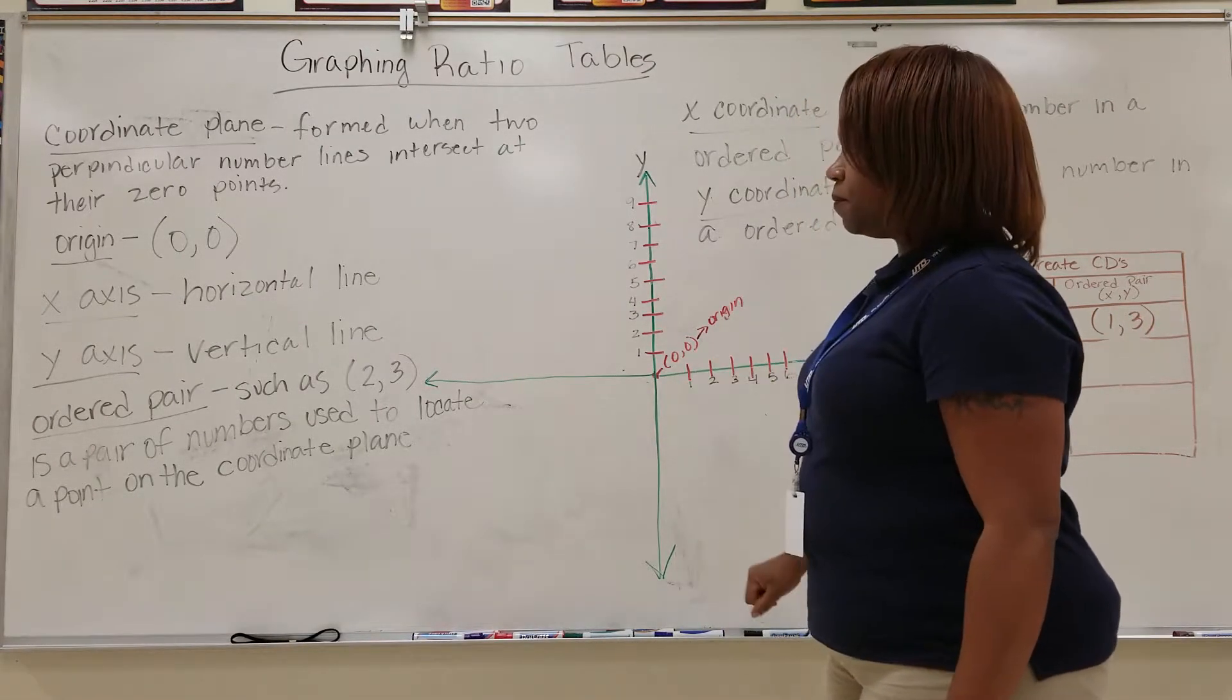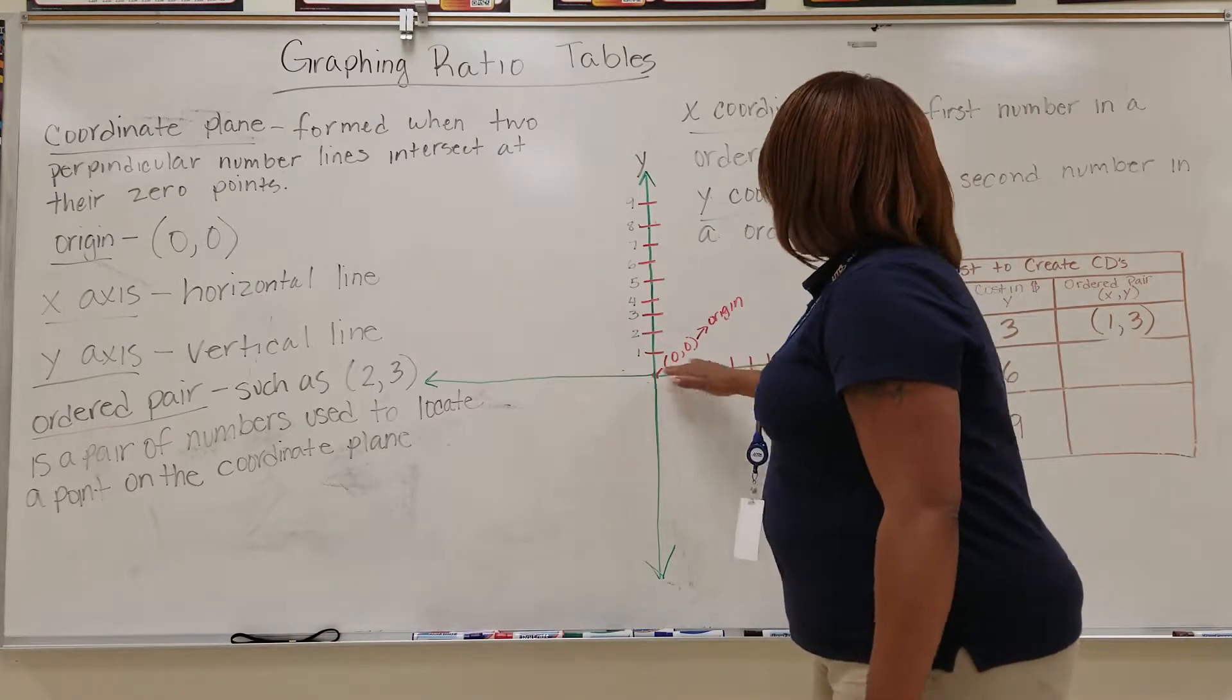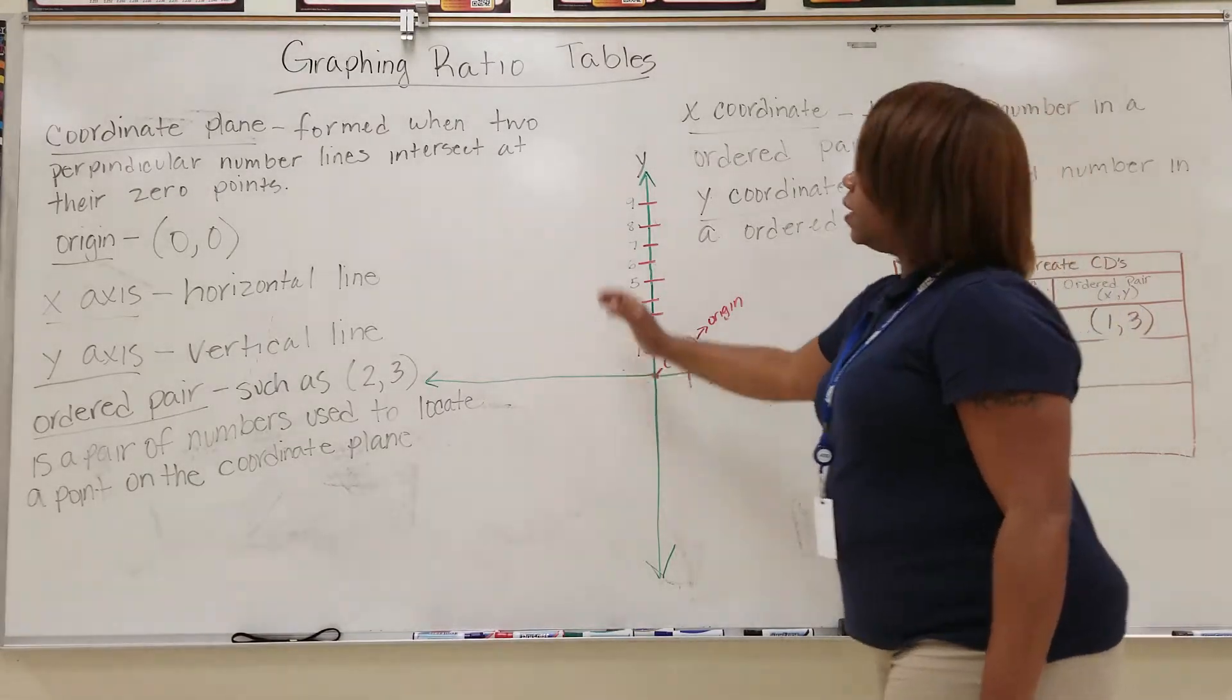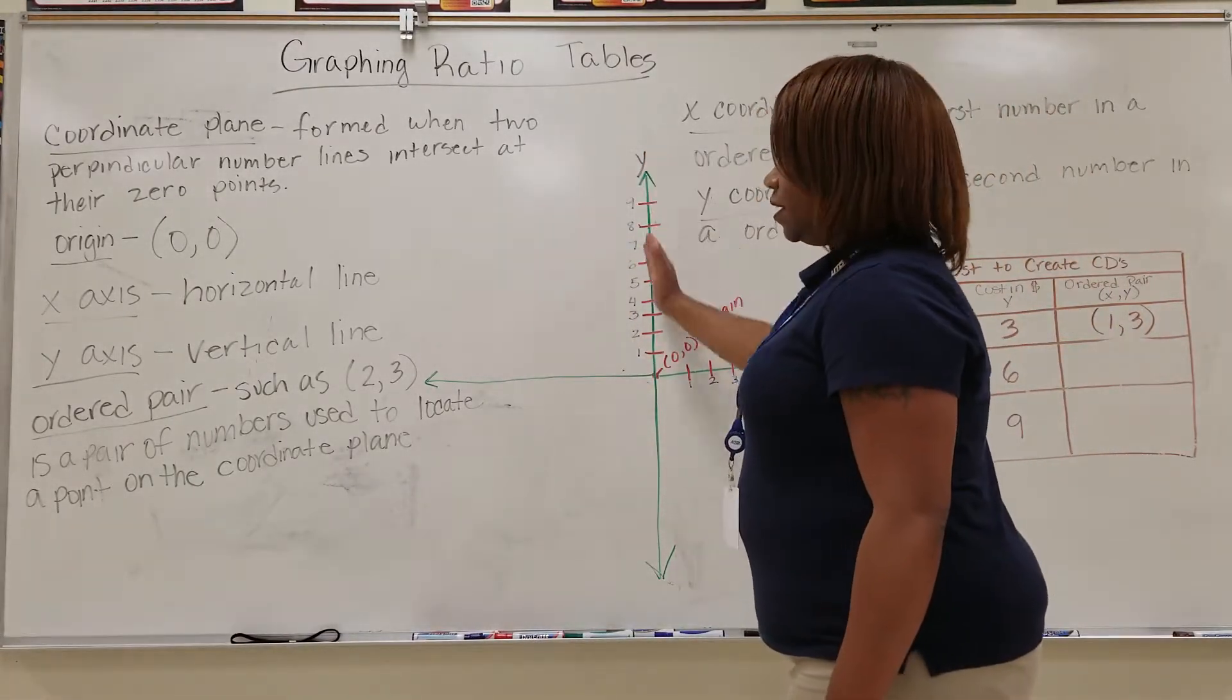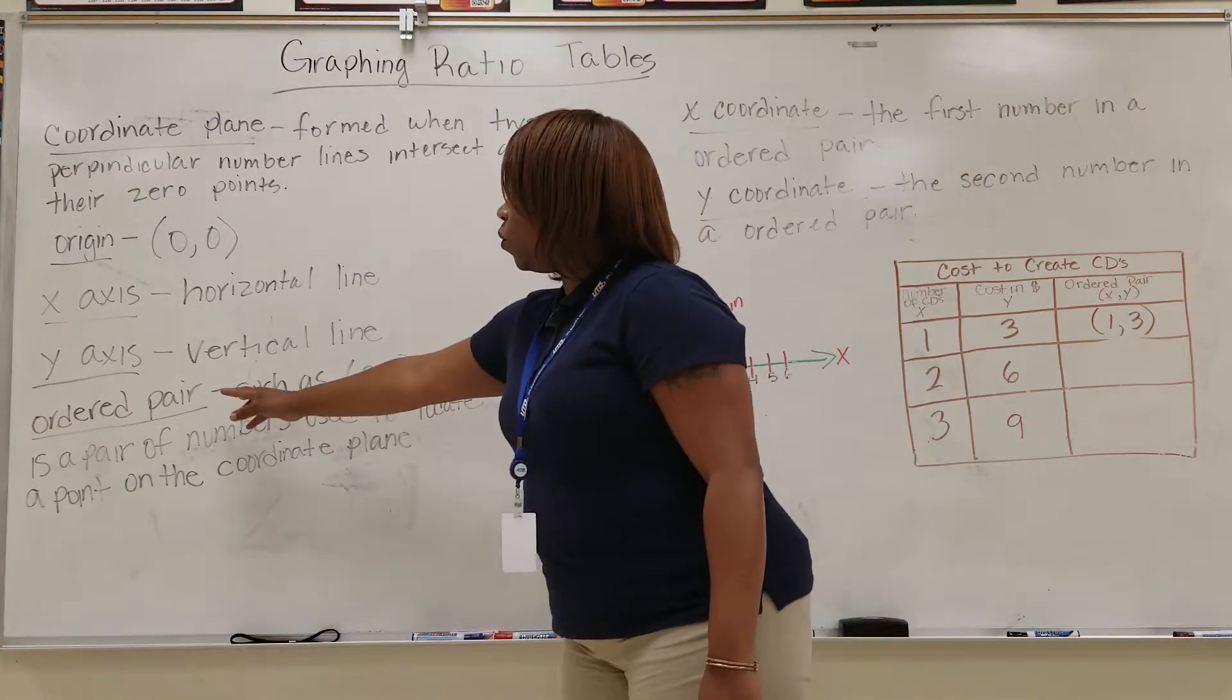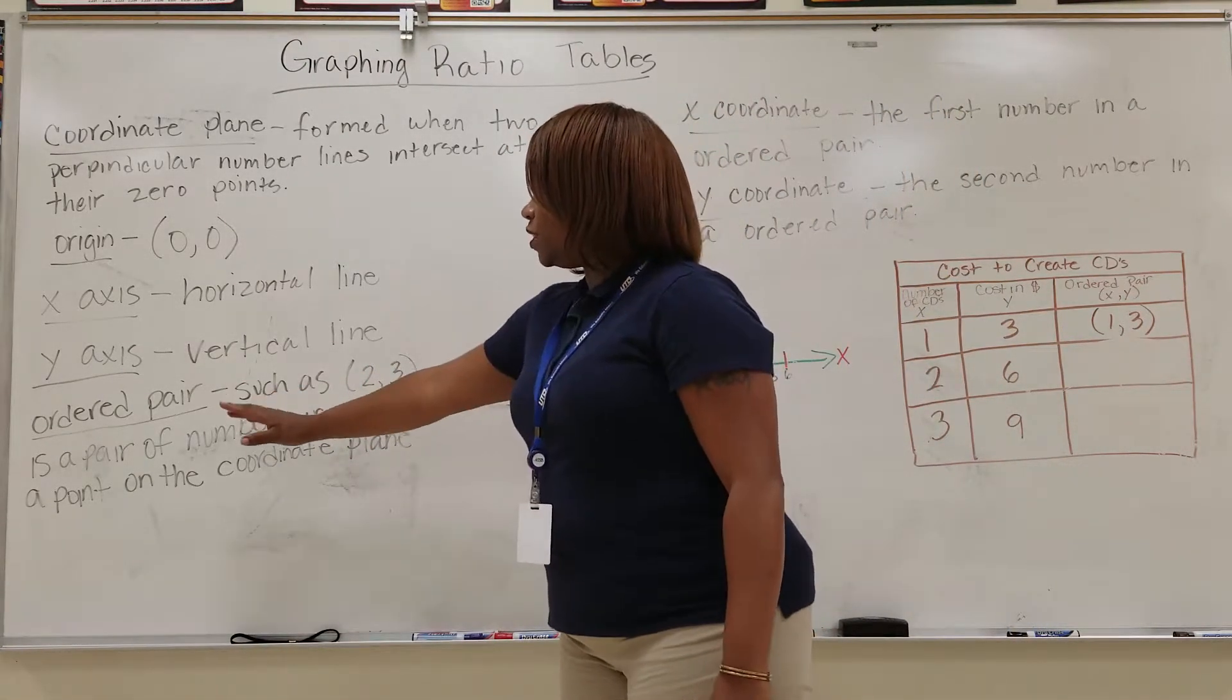Here you have your x-axis, it is a horizontal line. This is your y-axis, this is the vertical line. You have ordered pairs such as (2, 3), which is a pair of numbers used to locate a point on the coordinate plane.